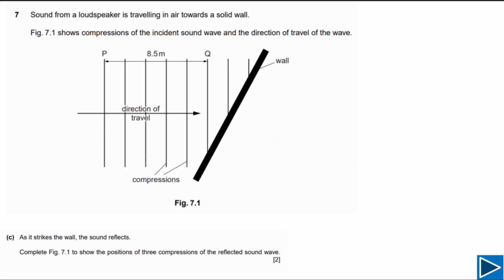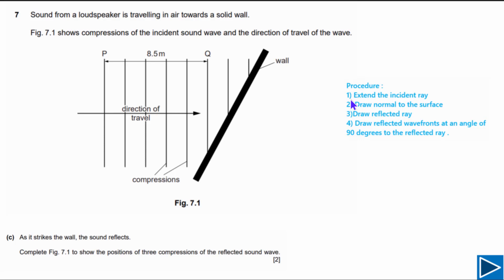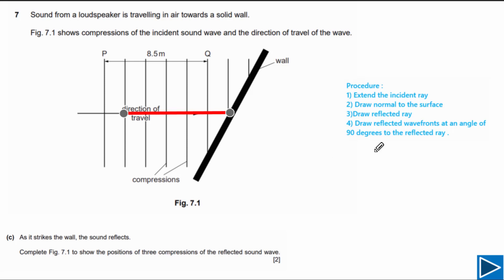We will follow four steps: first, extend the incident ray to the wall; second, draw the normal to the surface; third, draw the reflected ray; and fourth, draw the reflected wave fronts at 90 degrees to the reflected ray. For step one, extend the incident ray to the wall using a red line.